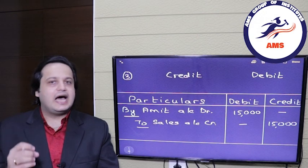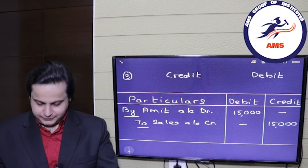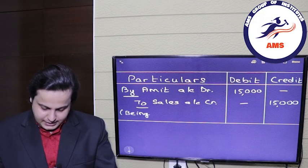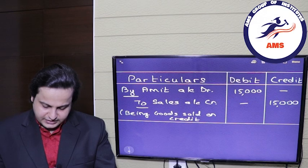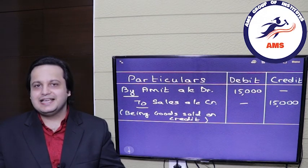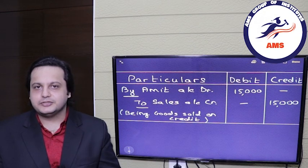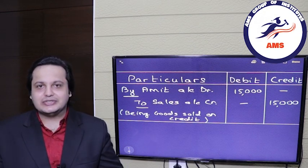The last step is the narration. Narration will always start with 'Being': 'Being goods sold on credit.' You do not have to mention who you are selling it to. The narration is simply an explanation of the transaction in simple language. This is how you do journal entries.